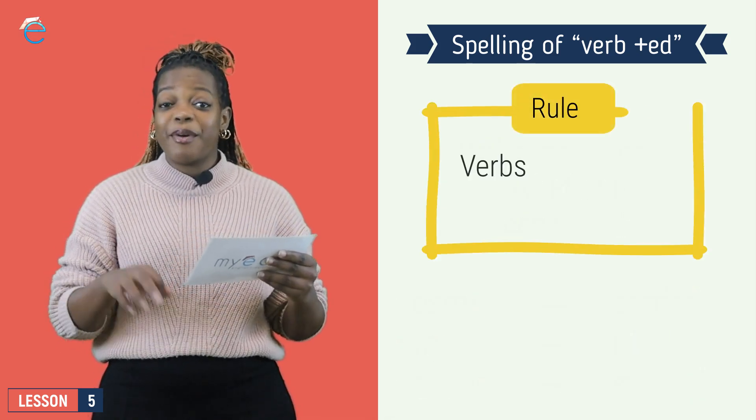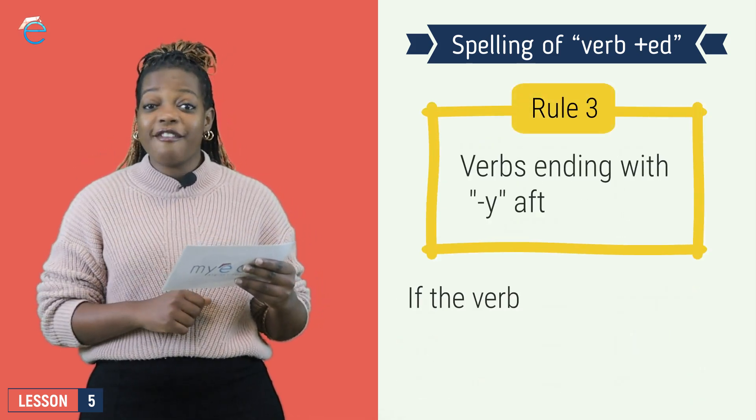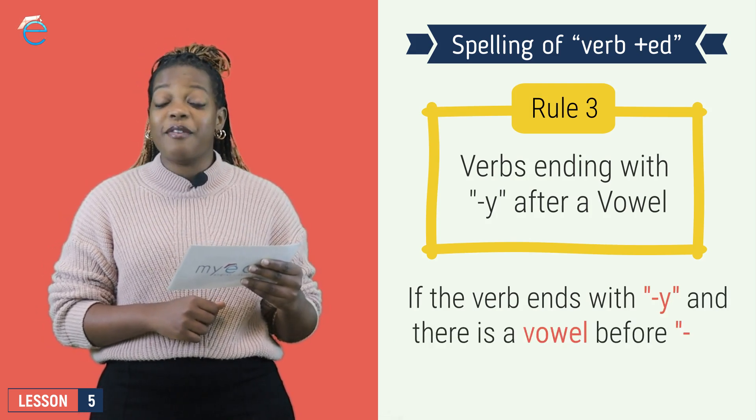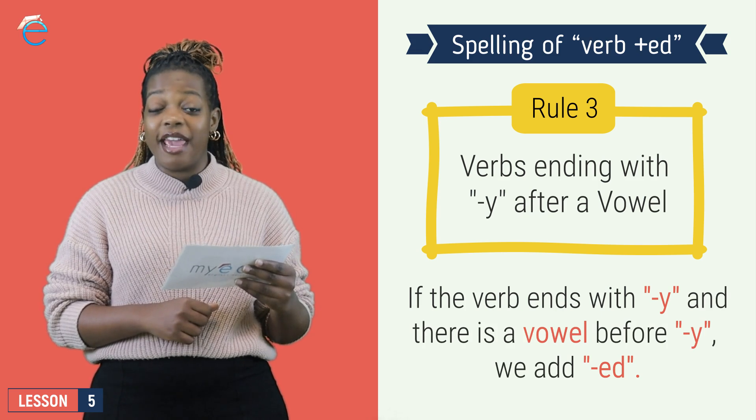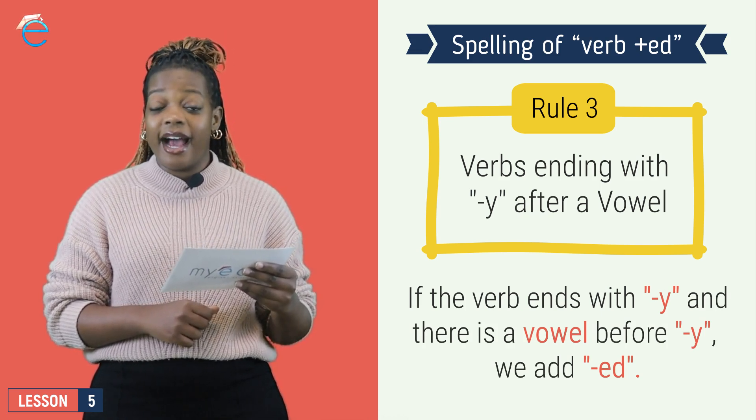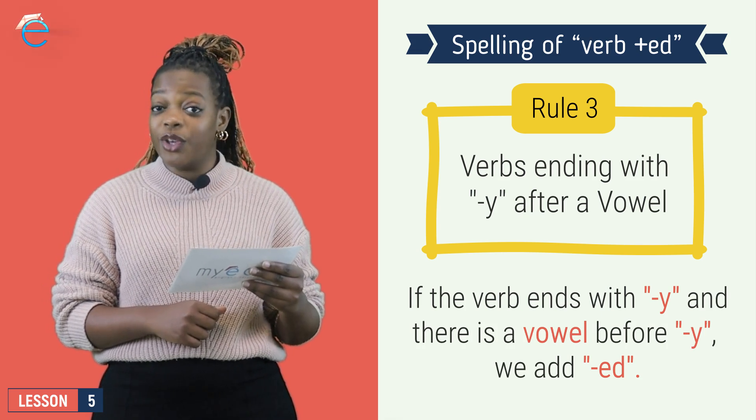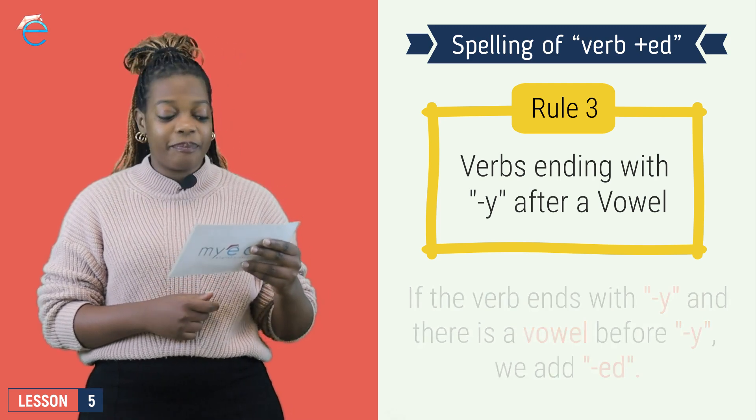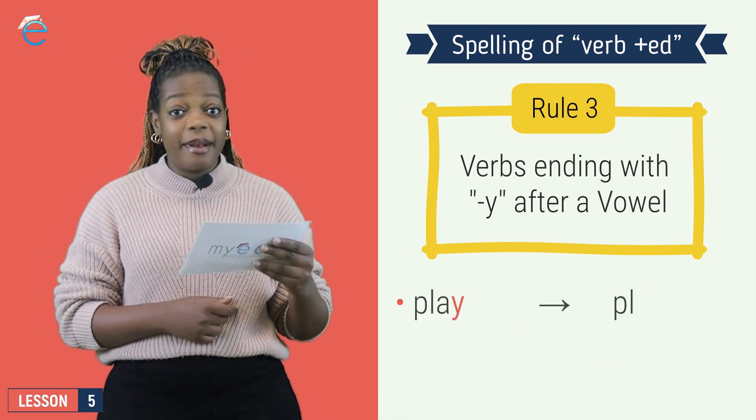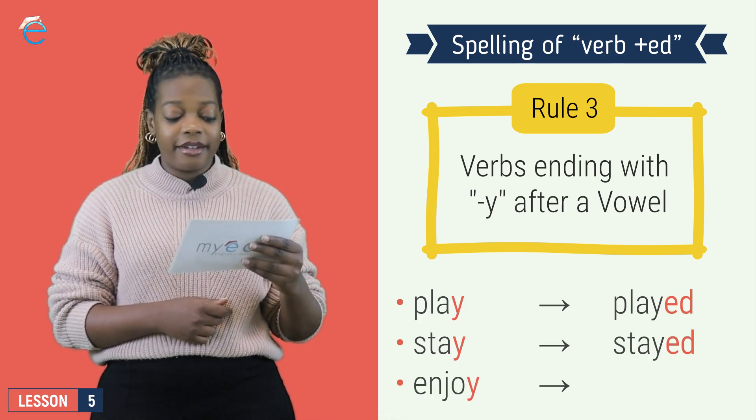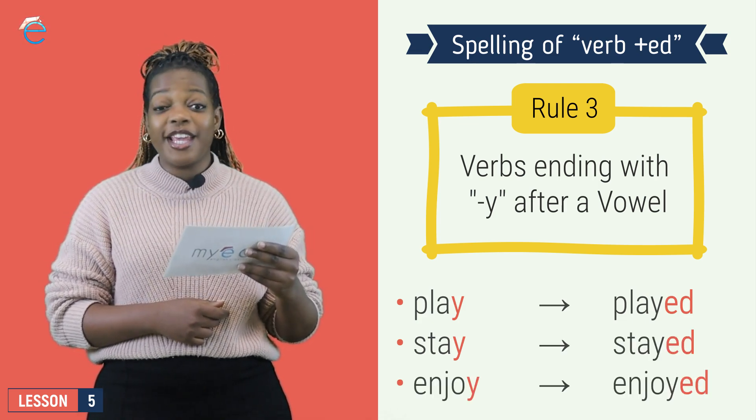Rule number three. If my word ends in a Y, and before my Y I have a vowel, A, E, I, O, U, then all I do is add ED. Play, played. Stay, stayed. Enjoy, enjoyed.